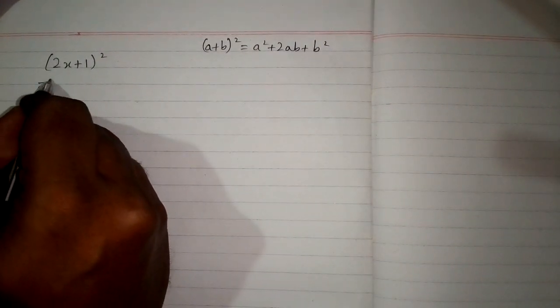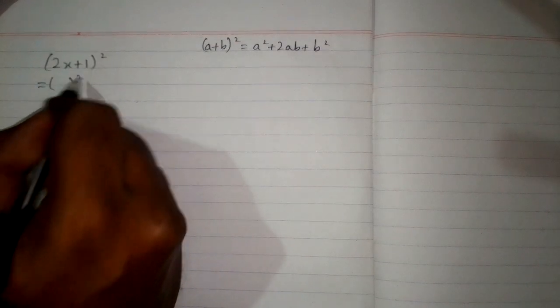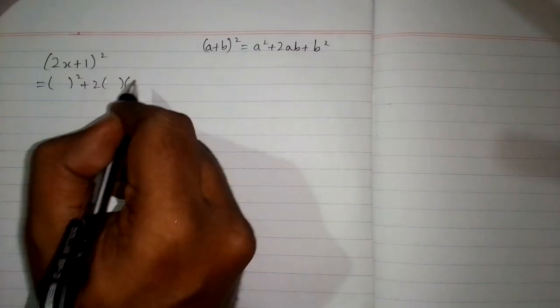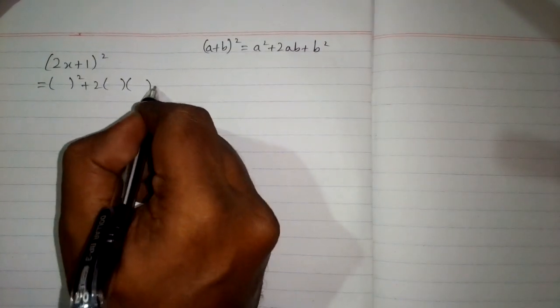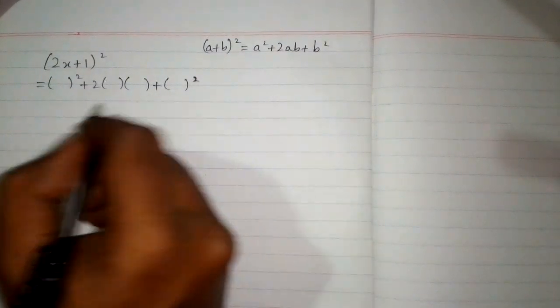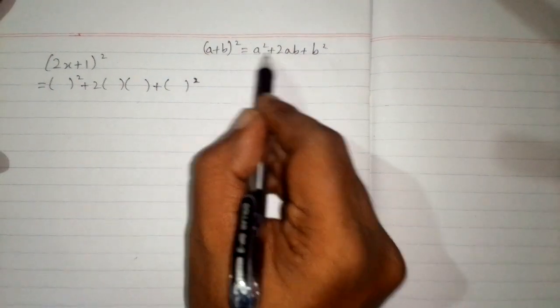First we will write the structure of the formula: a² + 2ab + b². We can put brackets in place of a and b.